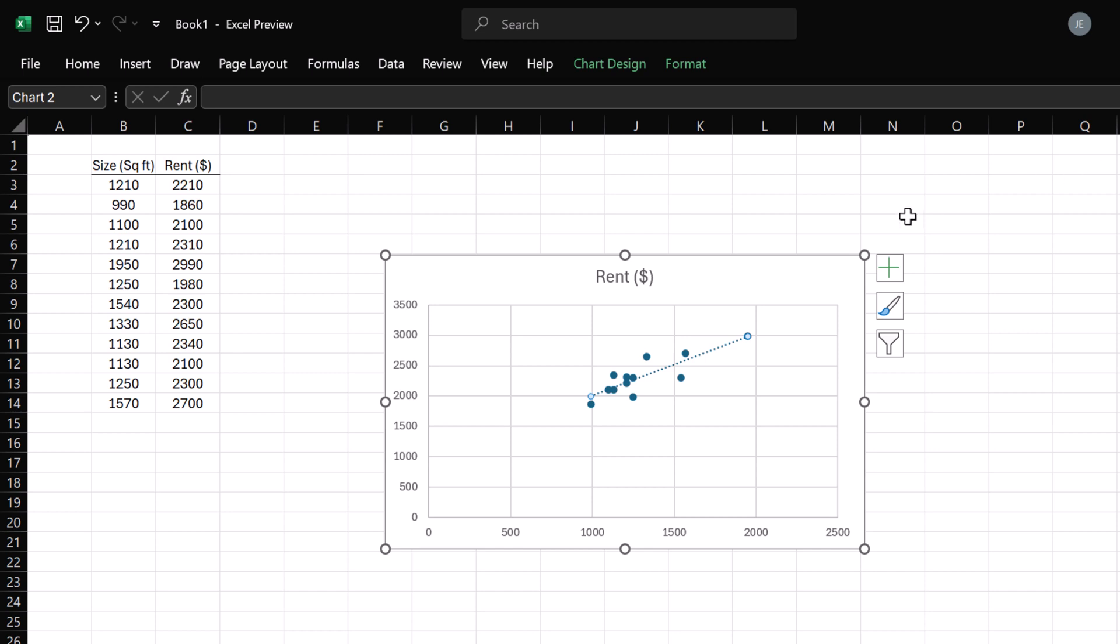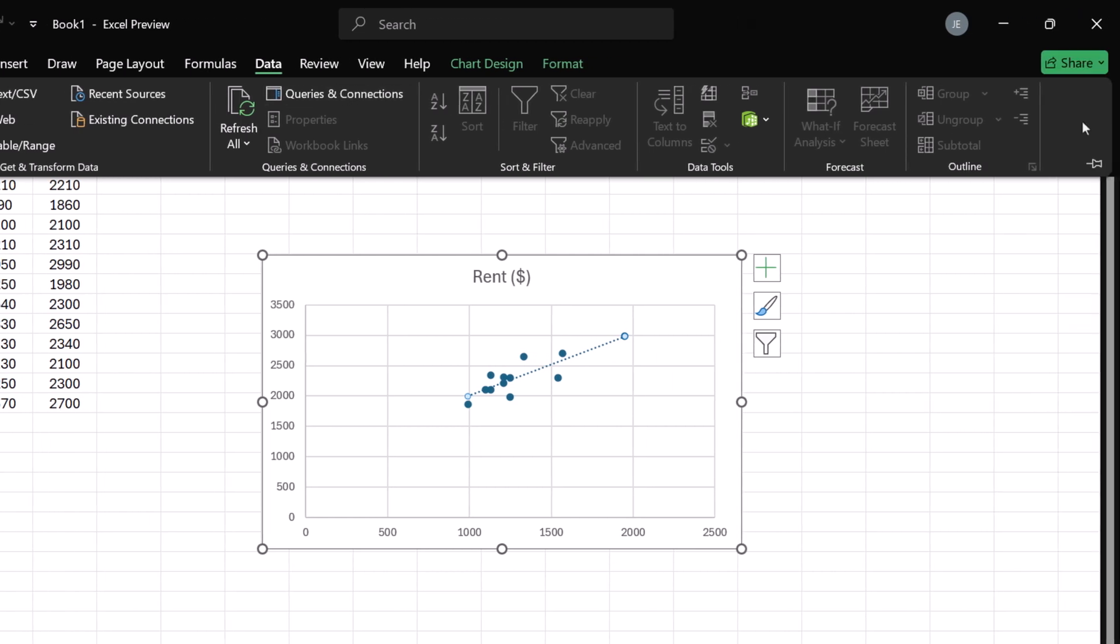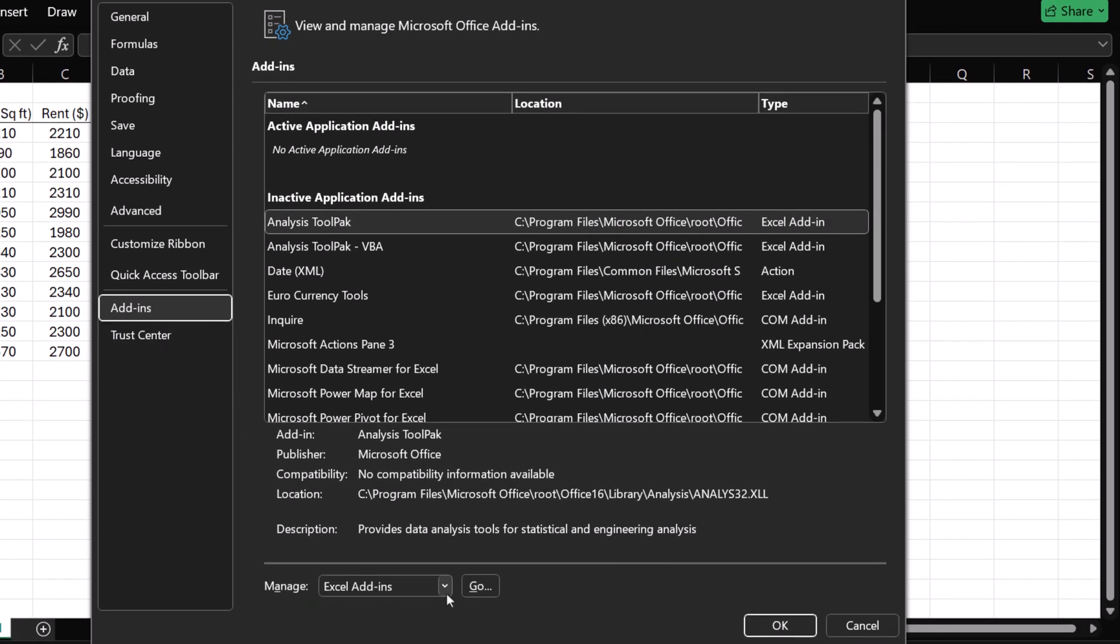To generate the regression output, click the Data tab. You should see Data Analysis to the right here. If it's not there, right-click on the ribbon and click Customize the Ribbon. Click Add-ins under Excel Options. Then with Add-ins selected at the bottom here, click Go.